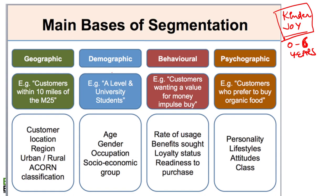Market segmentation can be done on the basis of geographics — location, such as people from Ludhiana, Pan India, or worldwide. Demographic segmentation covers age, gender, and socioeconomic group. There is also behavioral and psychographic segmentation.